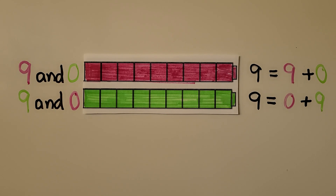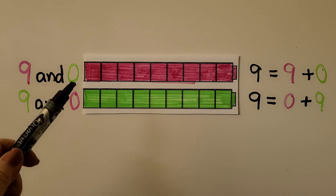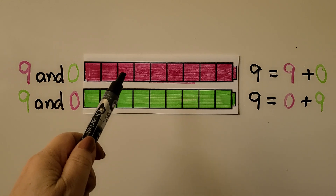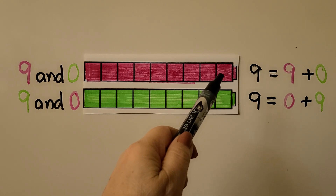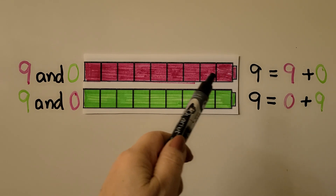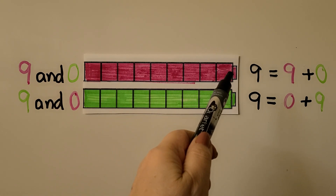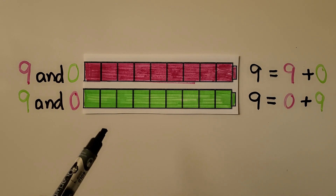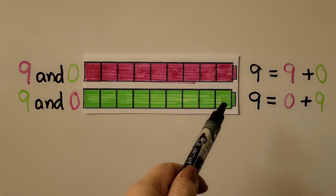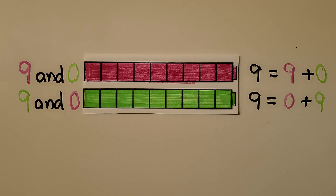We can use the number pair nine and zero to show nine. We can use nine pink: one, two, three, four, five, six, seven, eight, nine — and zero green ones. We have nine pink ones and no green ones; that would be nine plus zero. We could also do nine green ones and zero pink ones. It doesn't matter which order we use — nine plus zero or zero plus nine — they will still equal nine when added together.